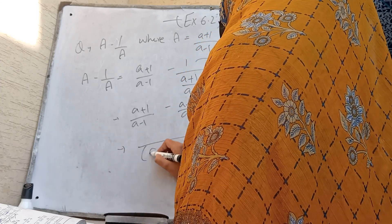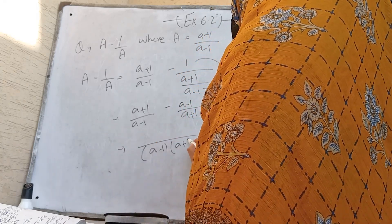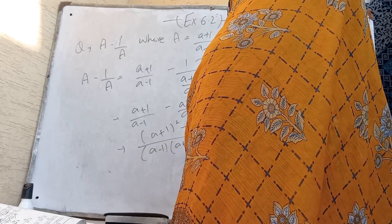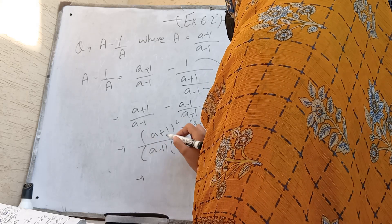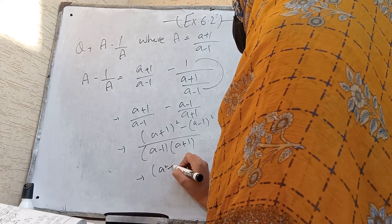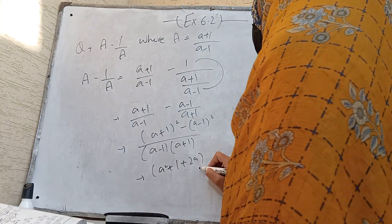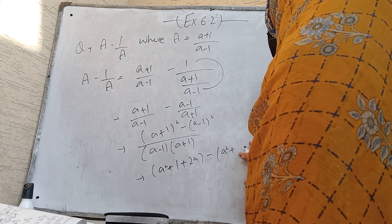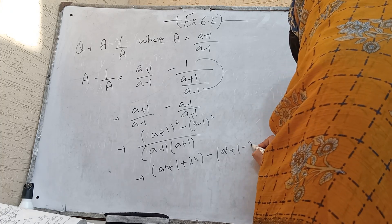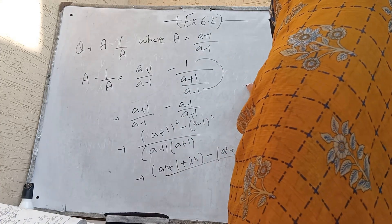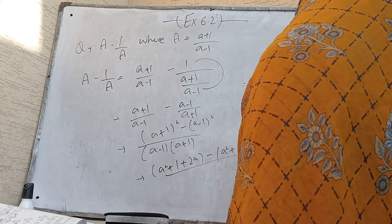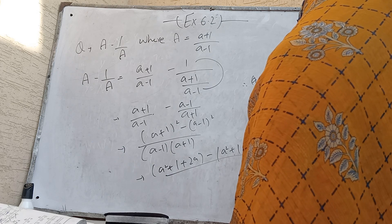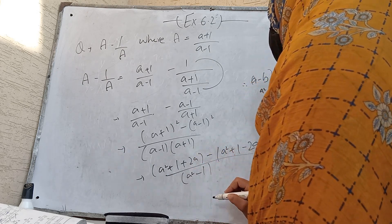Taking the LCM, which is (a minus 1) and (a plus 1), we get (a plus 1) whole square minus (a minus 1) whole square. Using the formula (a plus b) whole square which gives a squared plus b squared plus 2ab, minus a squared plus b squared, which simplifies to 1 minus 2a. Then dividing by (a minus 1)(a plus 1), which equals a squared minus b squared, giving a squared minus 1.